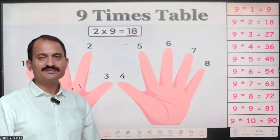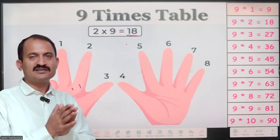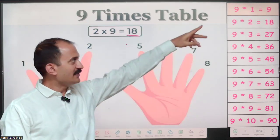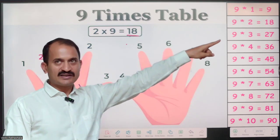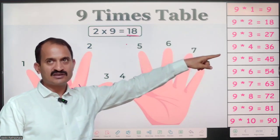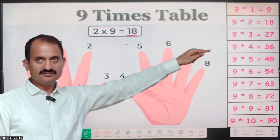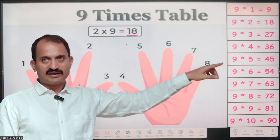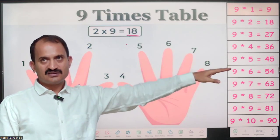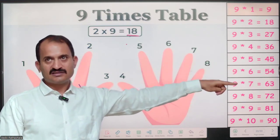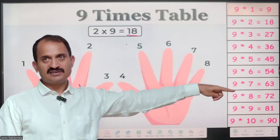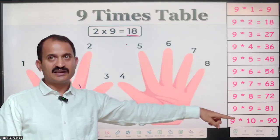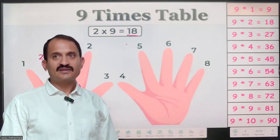In this way, you can easily find the table of 9: 9 ones are 9, 9 twos are 18, 9 threes are 27, 9 fours are 36, 9 fives are 45, 9 sixes are 54, 9 sevens are 63, 9 eights are 72, 9 nines are 81, and 9 tens are 90.